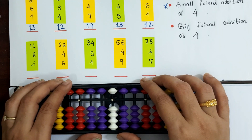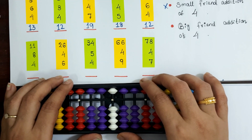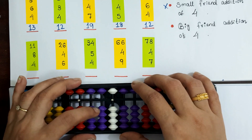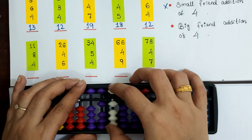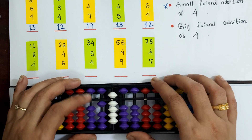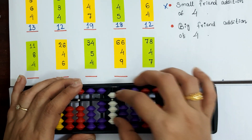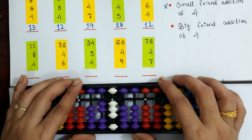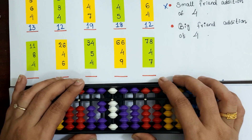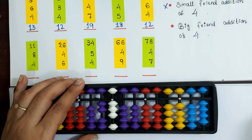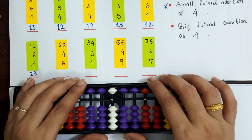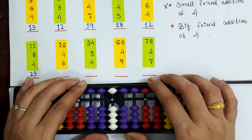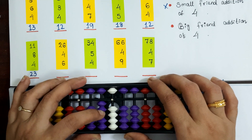Next example: 11 plus 8 plus 4. Using the formula, plus 4 is plus 10 minus 6. Answer is 23.